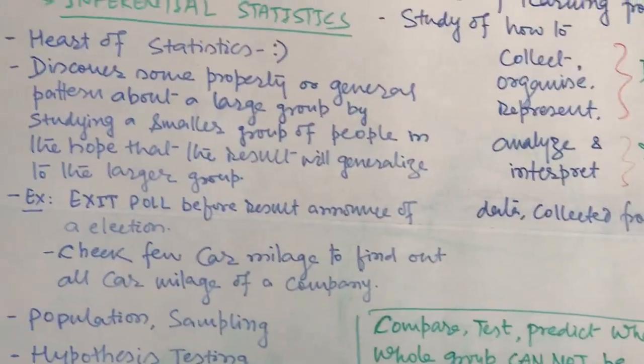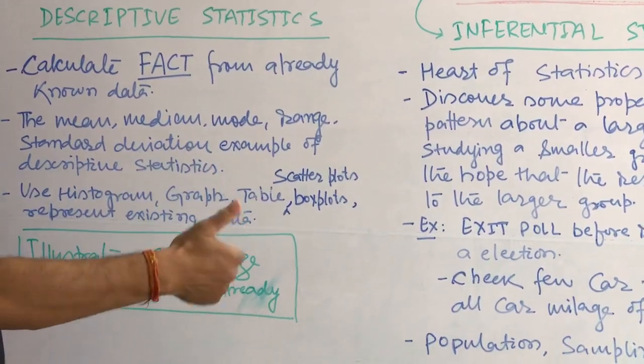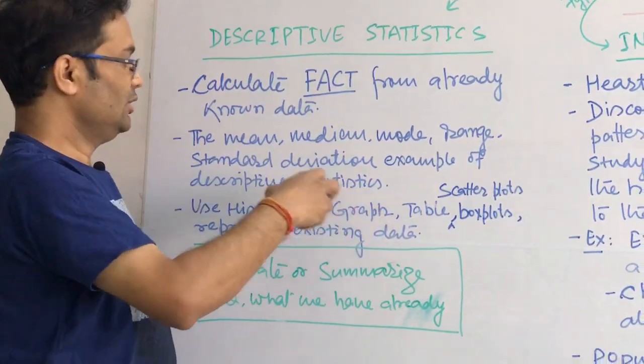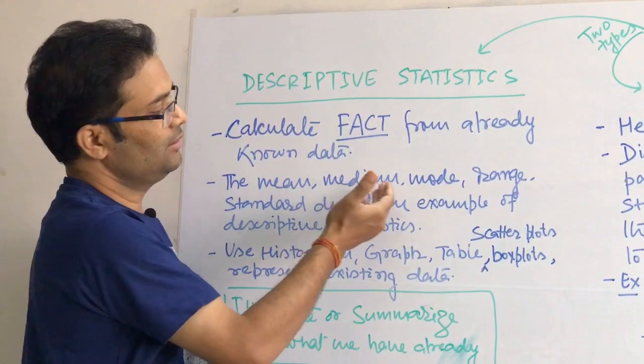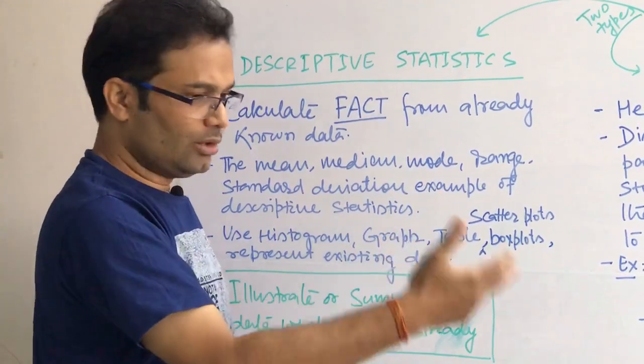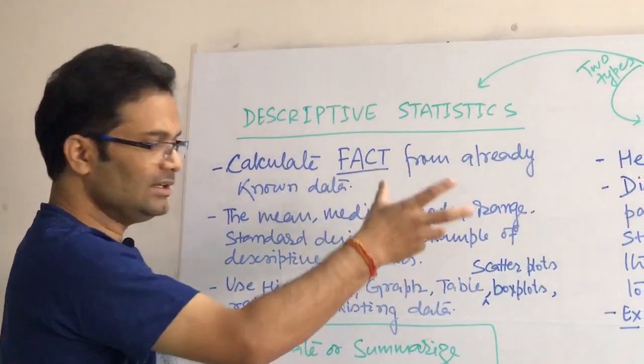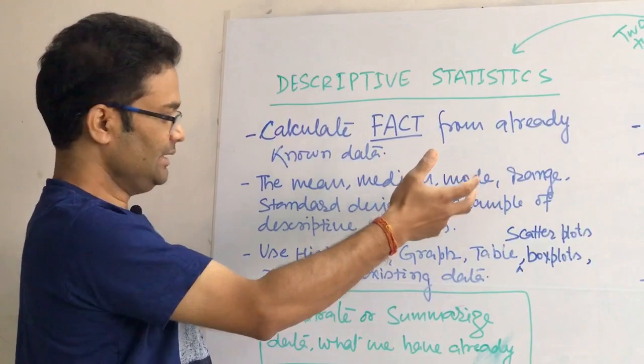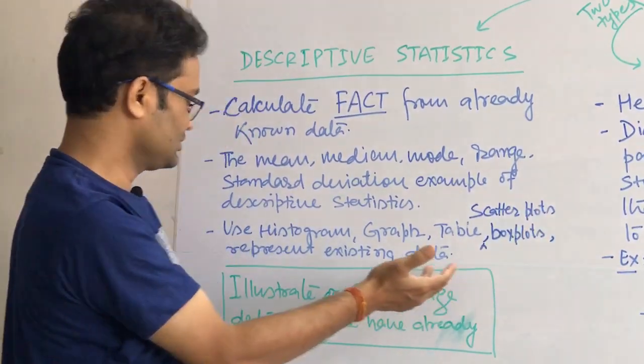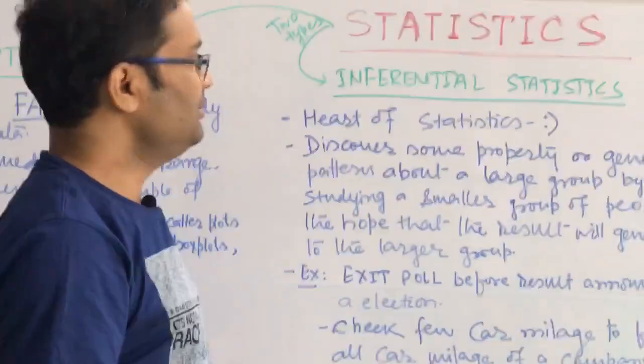Come back to descriptive statistics. If you want to calculate the facts, something from already known data. I keep repeating this is for already known data. When you have the data, then you want to do something. Suppose you want to find out what is the mean, median, mode, range, standard deviation. That is called descriptive statistics. Down the line, you will come to know what is mean, median, mode and when to use that. To represent the graphical representation of descriptive statistics, we use histogram, graph, table, scatter plots, box plots. These are the ways to show the data in graphical format.